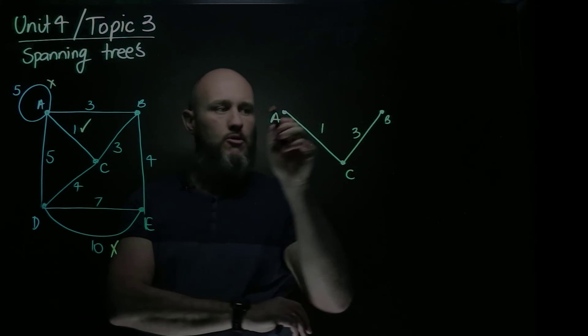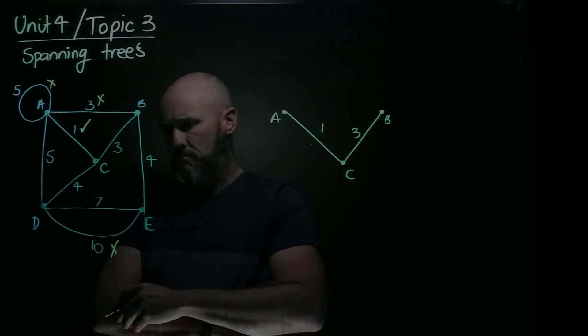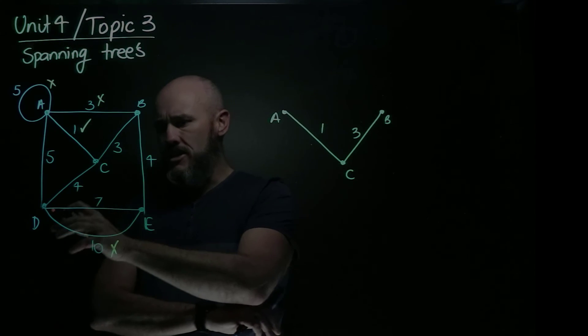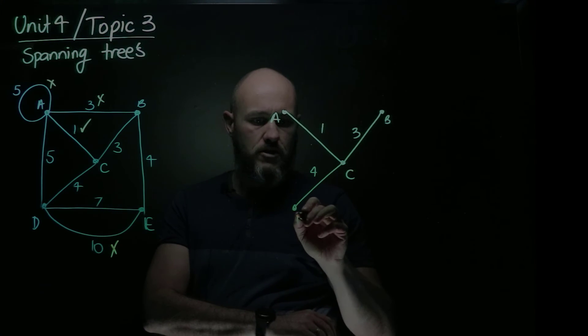And I don't need to go from A to B anymore, because that will create a cycle. So that's out as well. I need to connect D, and I can connect D with a 4, so that's pretty good. Let's do that. 4, D.